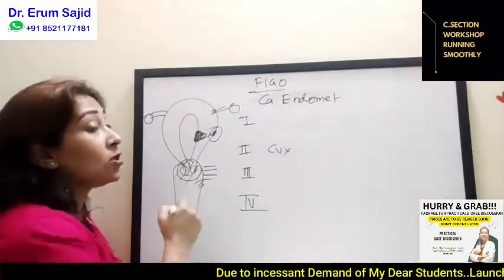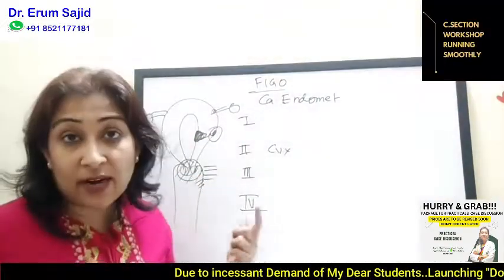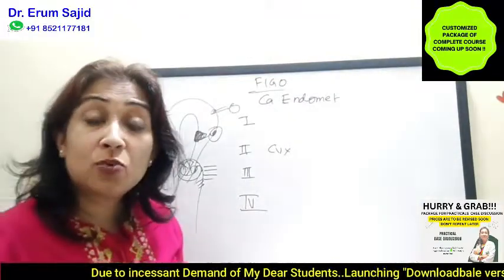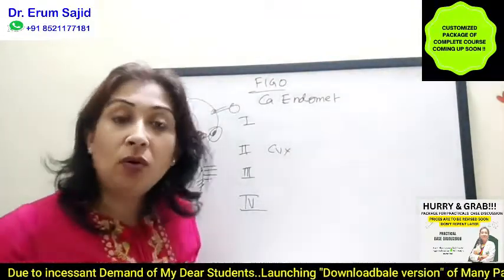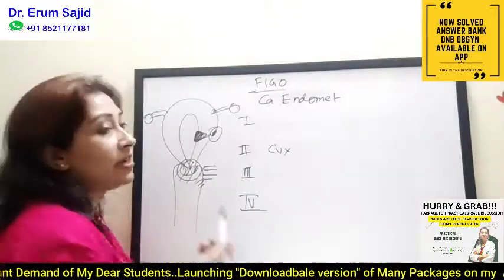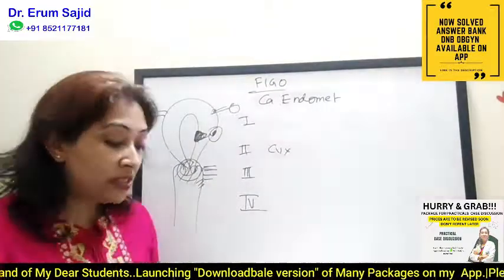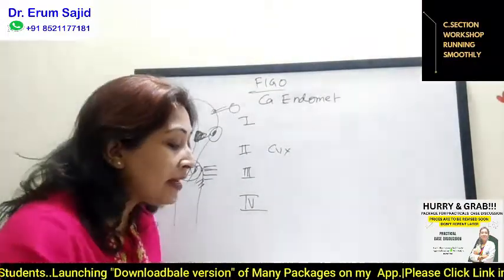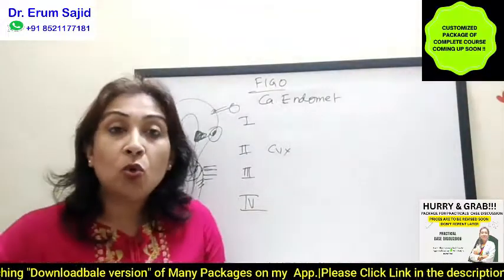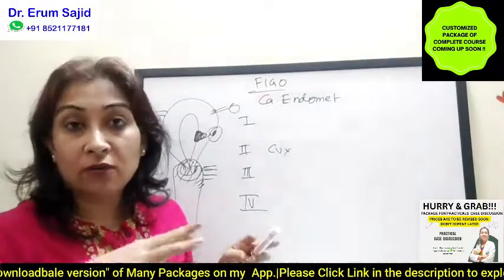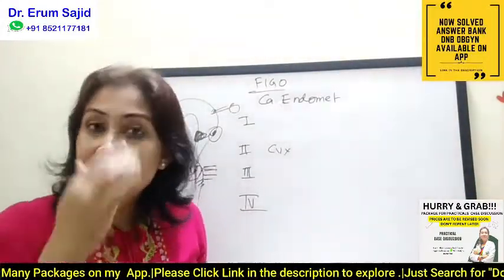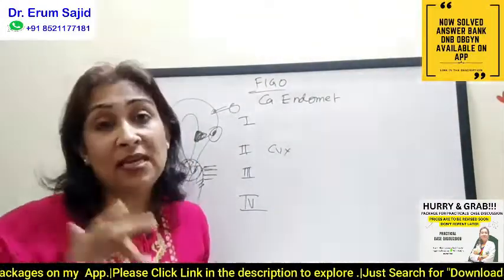Cervical glandular involvement was present in stage 1b, so that spread continues — it goes to the parametrium and the vagina. Therefore stage 3b automatically becomes spread to the vagina or the parametrium.